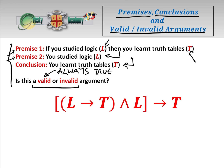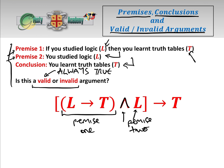Now let's have a look at how we write this using mathematical logic. Premise 1 — if you studied logic, then you learnt truth tables — is written as L implies T. Premise 2 is you studied logic. We have to assume both premise 1 and premise 2 are true. So we want to find out: if premise 1 and premise 2 are true, then is the conclusion T also true? We have to manipulate this logic statement to see if it is always true, i.e., if it is a tautology.